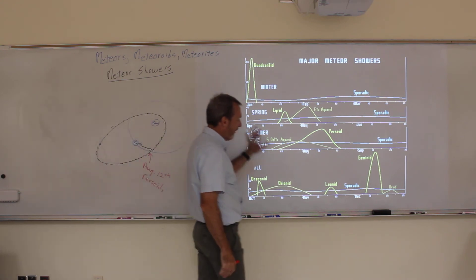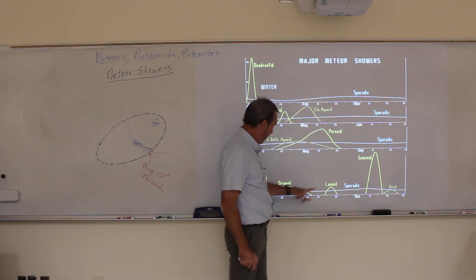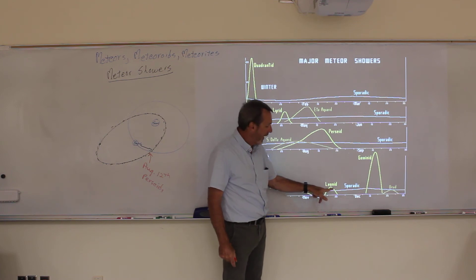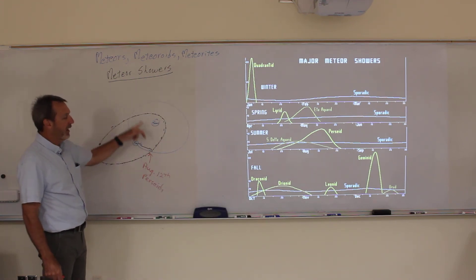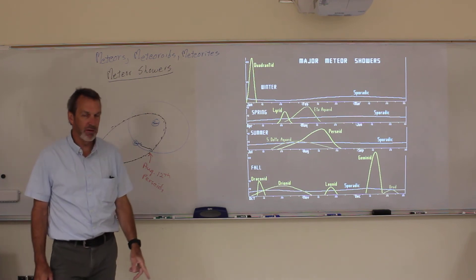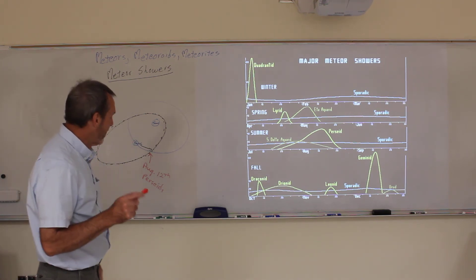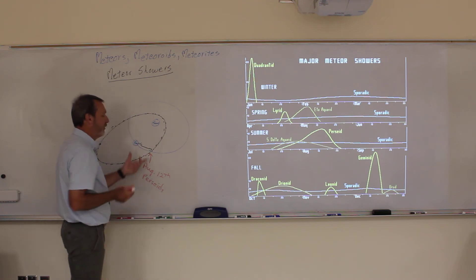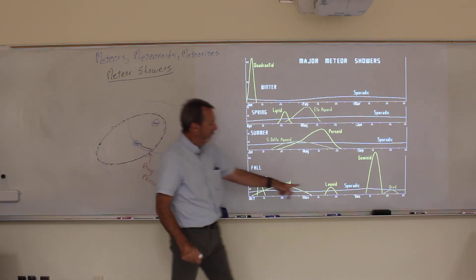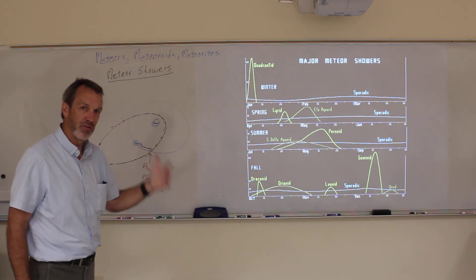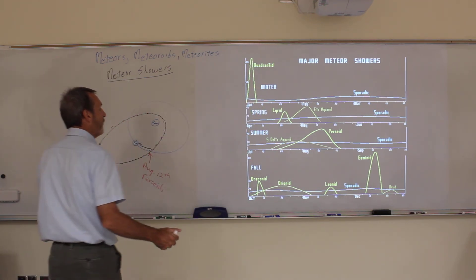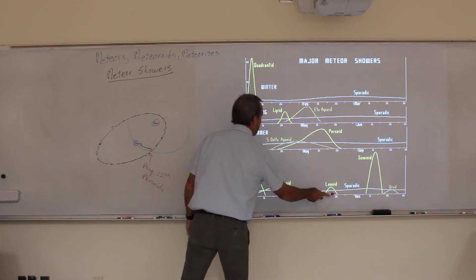There's other ones that are interesting like the Leonids I'm going to tell you about. Look, it's only really about 20 per hour. However, every once in a while this becomes spectacular. Why? Because the comet that goes by, it's called Temple Tuttle. The comet comes by every 33 years. So right after the comet comes by, it melts again, leaves a whole bunch of new stuff. And this one that's 20 per hour can often jump up to thousands per hour. And instead of a meteor shower, we call it a meteor storm. It doesn't happen that often, but occasionally it does. And when it does, it's very spectacular.